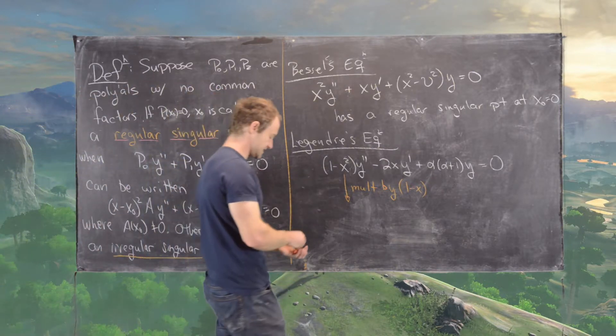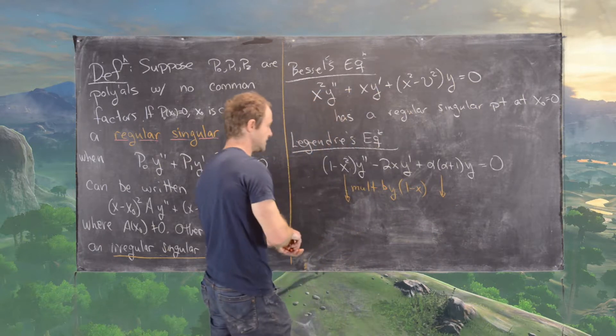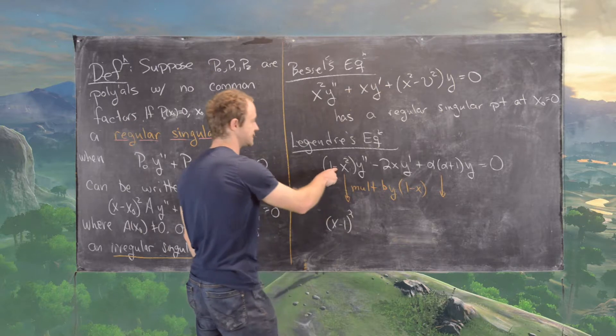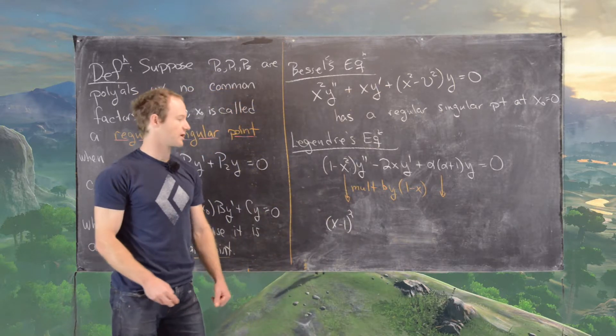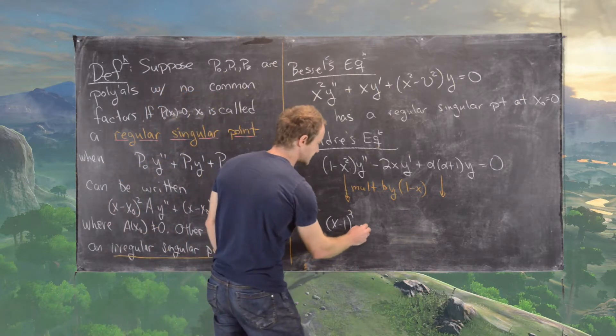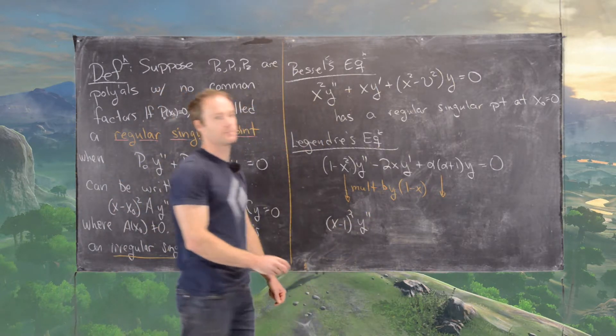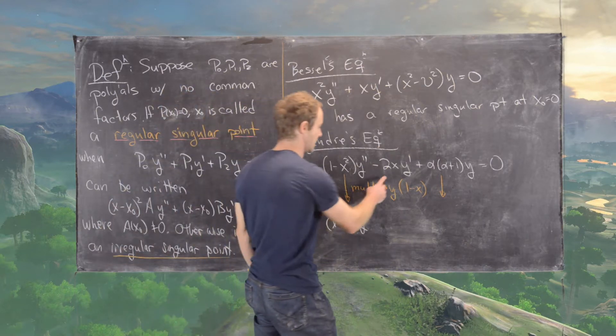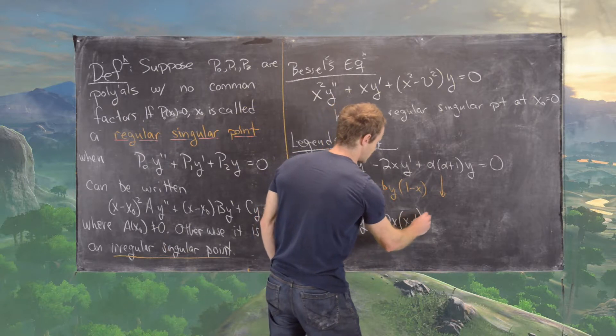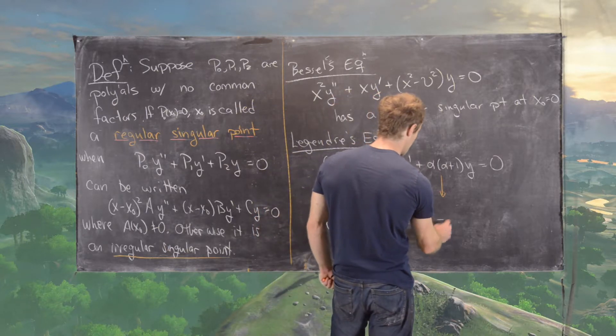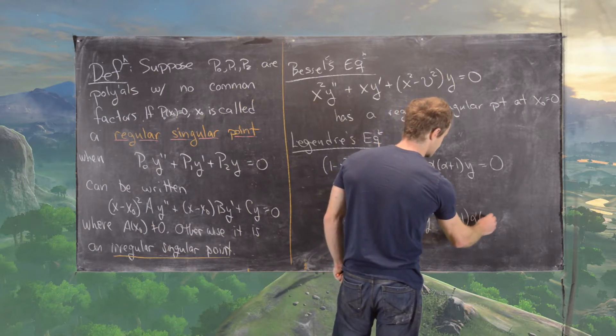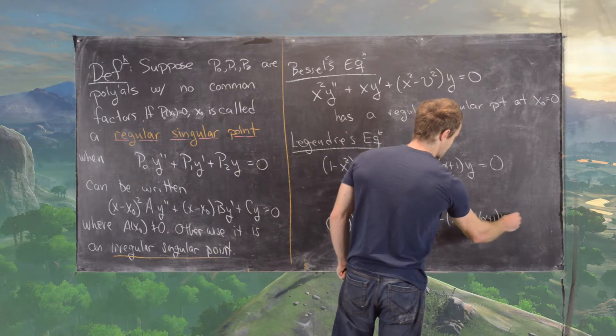That's going to turn this entire equation into the following: x minus 1 squared times y double prime plus 2x times x minus 1 times y prime minus x minus 1 times alpha times alpha plus 1 times y equals 0.